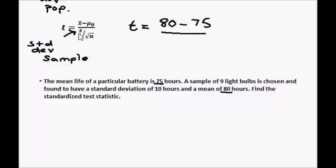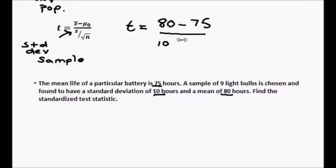Divided by s, that is the standard deviation of the sample and that is given as 10. Next we want to divide this by the square root of n, which is our sample given as 9 in the question.